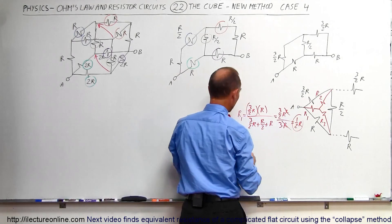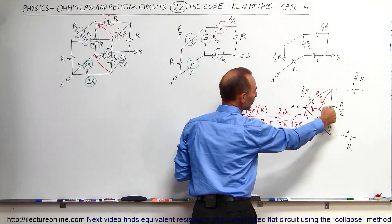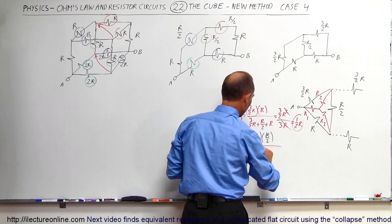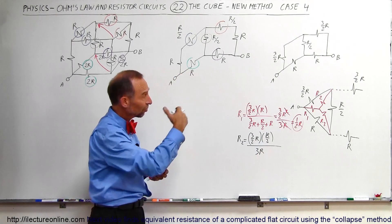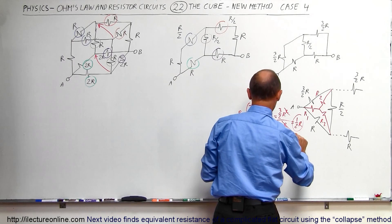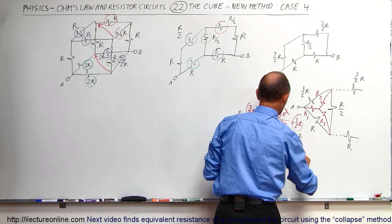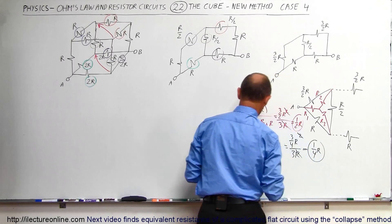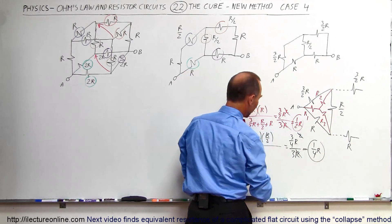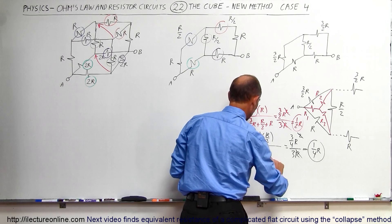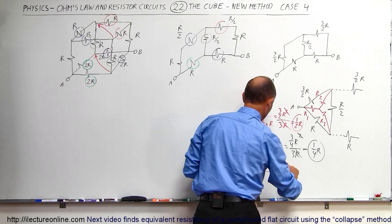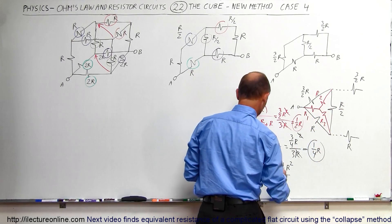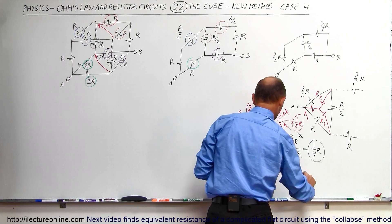We do the same for R2 and R3. R2 equals the product of its two adjacent resistors: (3/2R × R/2) / 3R = (3/4 R²) / 3R = 1/4 R. For R3, it's equal to (R × R/2) / 3R = (1/2 R²) / 3R = 1/6 R. So there are three different values for the three resistors in the Y circuit.